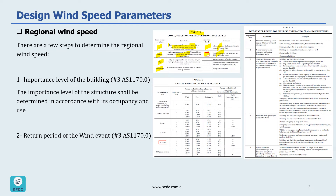High consequence of failure covers high consequence of loss of life or very great economic, social, or environmental consequences. There are two importance levels here: level three for major structures affecting crowds, and level four for post-disaster structures or dangerous activities. Exceptional consequence of failure, importance level five, is for circumstances where reliability must be set on a case-by-case basis, for exceptional structures. Our structure would be importance level two. Table 3.2 provides further descriptions and examples for each importance level.